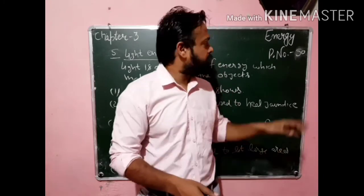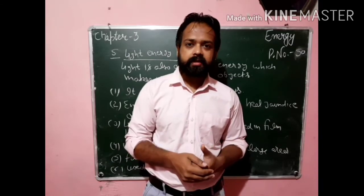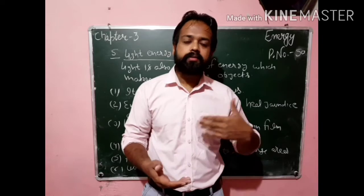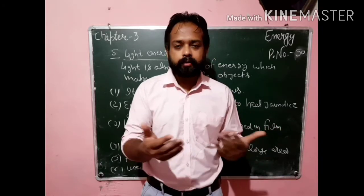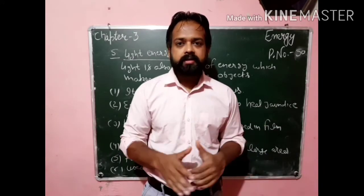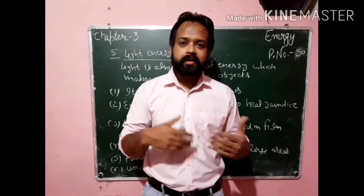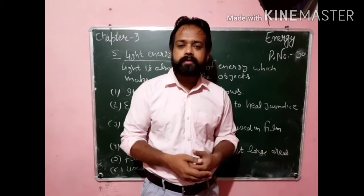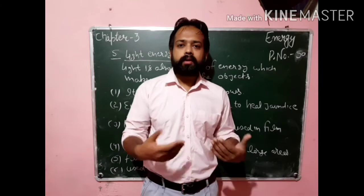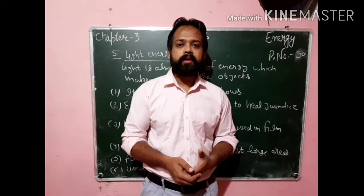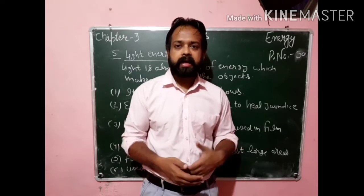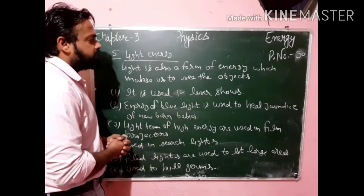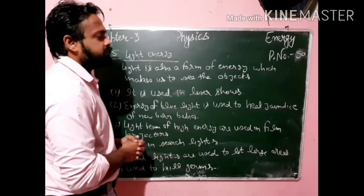The next form of energy on page number 50 is light energy. It plays a vital role in our life because light is a form of energy which gives us the sensation to see objects. With the help of light, we can see objects. If we are in a dark room with no light, we cannot see anything. The sun is the major source of light during the day. During night time, we can use candles, lanterns, lamps, LED bulbs, and many more things for light.